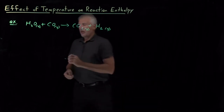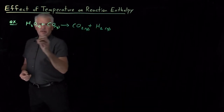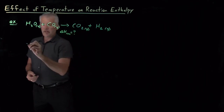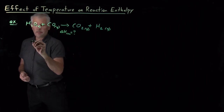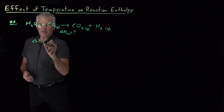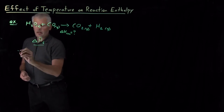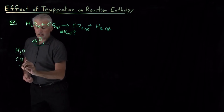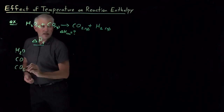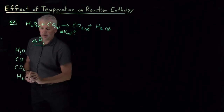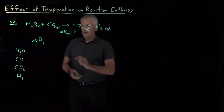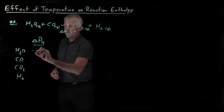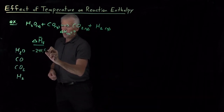Let's calculate the delta H of this reaction using heats of formation as an example. The heats of formation for H₂O, carbon monoxide, carbon dioxide, and H₂ can be looked up in a table of enthalpies of formation.